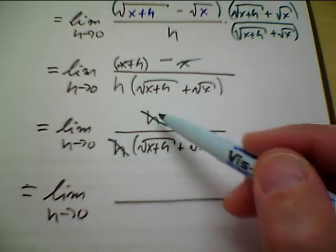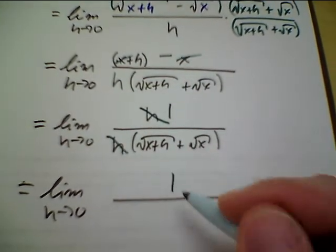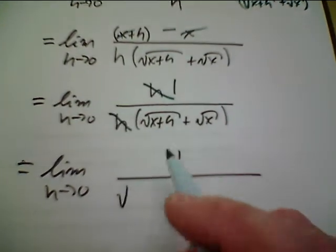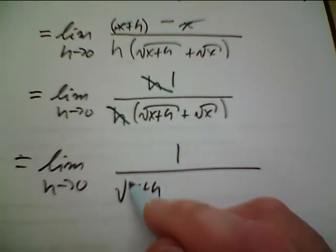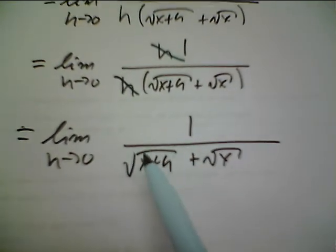Now, when these h's cancel, that's not a 0. This is now 1. h goes in the h one time. So, I have a 1 there. Now, I evaluate this limit.